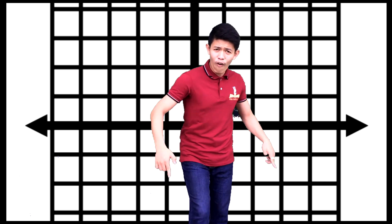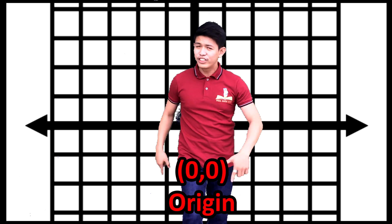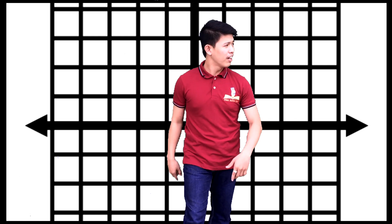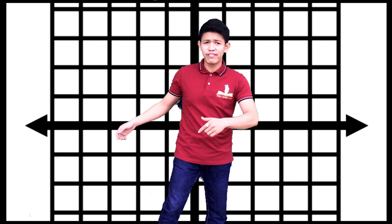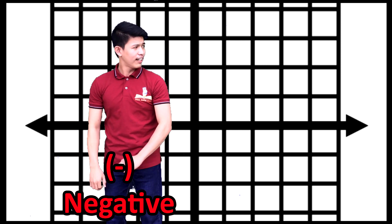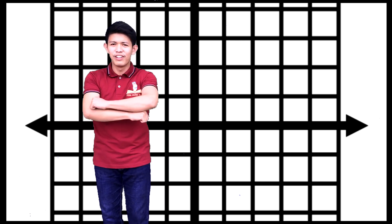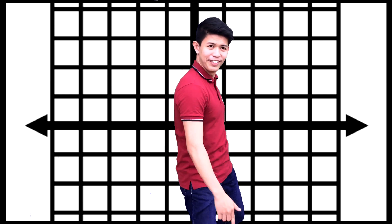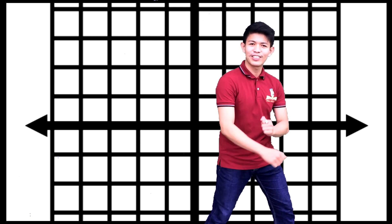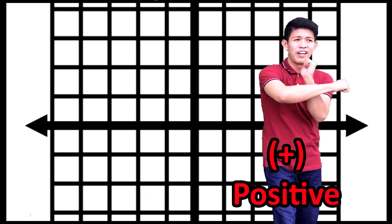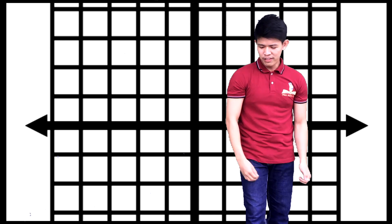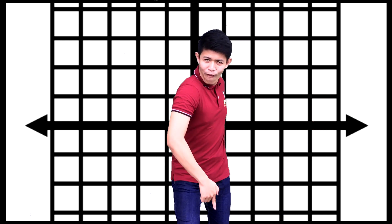This one is what we call the origin. If I will move to the left, that's negative. This one is what we call the origin. If I will move to the right, that's positive. Now this one is what we call the origin.